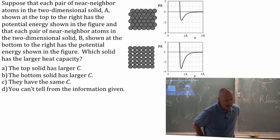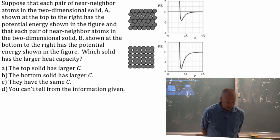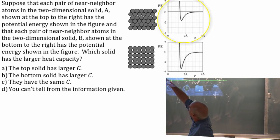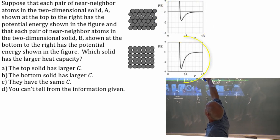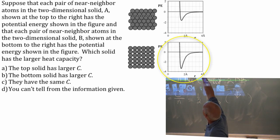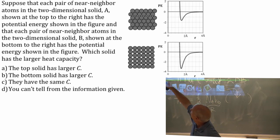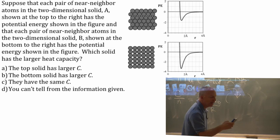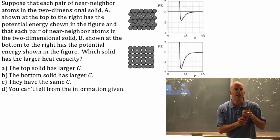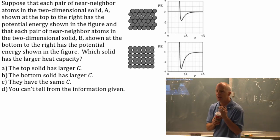Suppose that each pair of near-neighbor atoms in the solid at the top, solid A, have this bond strength, and each pair of near-neighbor atoms in solid B have that bond strength, so different kinds of atoms. These are more strongly bound than those, or each atom is more strongly bound to each other. Which solid has the larger heat capacity? I'll give you a minute. Which of these two solids has the larger heat capacity?